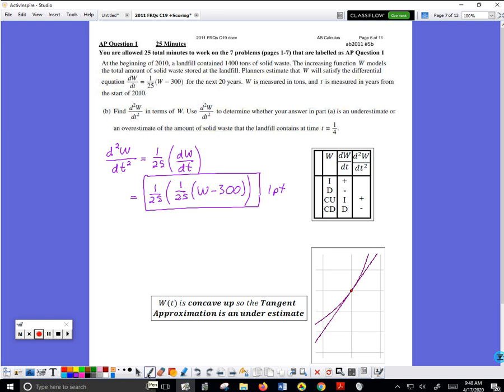So I just need to figure out whether W is concave up or concave down, because this is what I'm trying to answer: is my tangent approximation from part A an underestimate or overestimate.